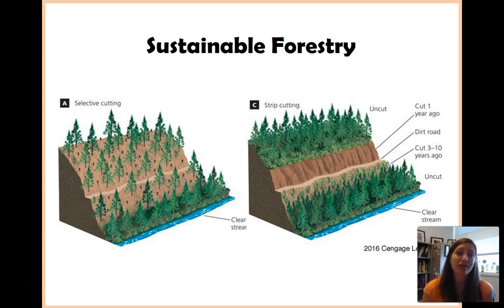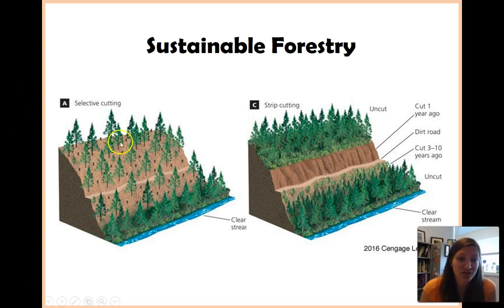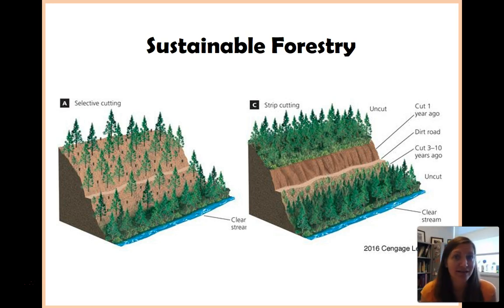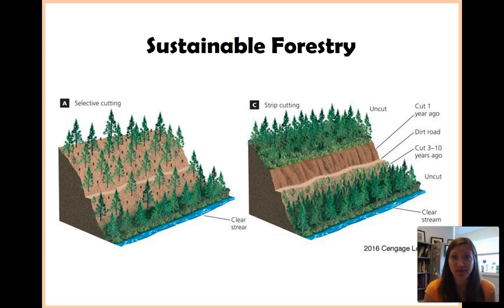For whatever criteria you have, you're selecting them, which means you're leaving some behind, as you can see here — we're leaving quite a bit behind. That means there are roots to hold that soil in place, roots to soak in water from when it rains, and there's still habitat here for organisms. By using selective cutting, you're actually getting rid of a lot of the downsides of clear cutting, even though you're still getting a benefit out of it.